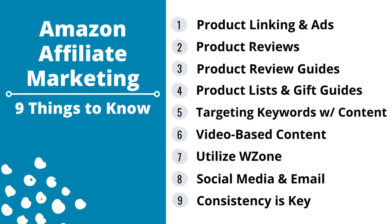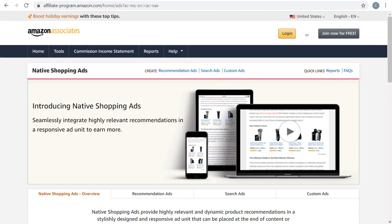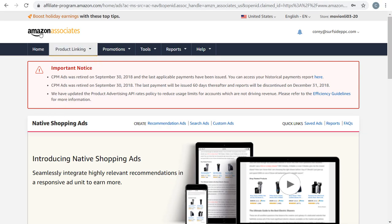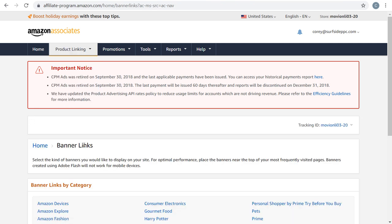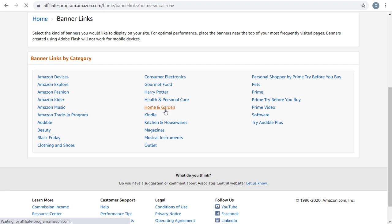One of the most important things is making sure your website — or wherever you are posting your Amazon affiliate marketing links, whether it's YouTube, Twitter, or Pinterest — you want to make sure you're using the proper product linking. You're also incorporating some of the built-in banners and native shopping ads that Amazon Associates has available to you. Starting with product linking: when you go to Amazon after you sign up to be an associate, you go to the backend of your Amazon Associates account through the product linking tab.